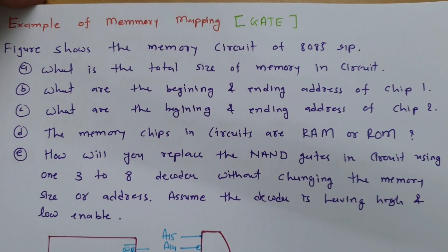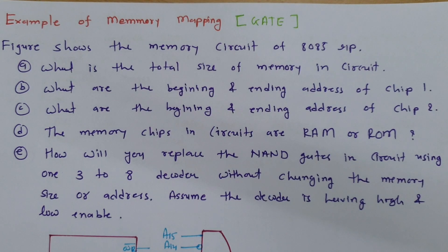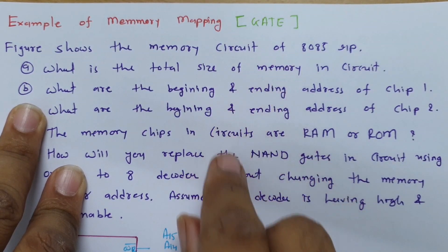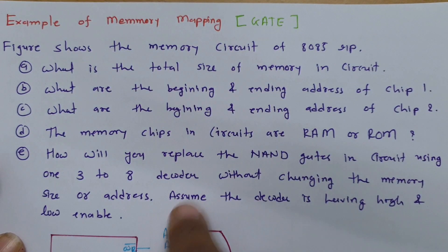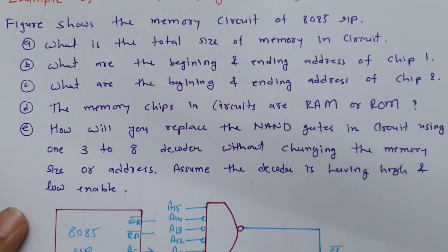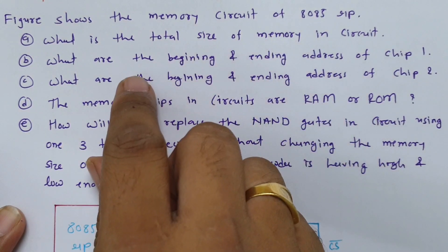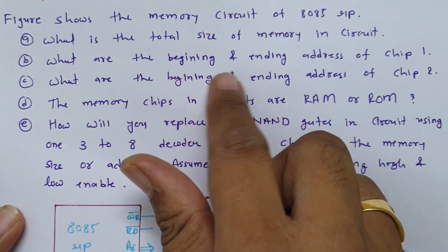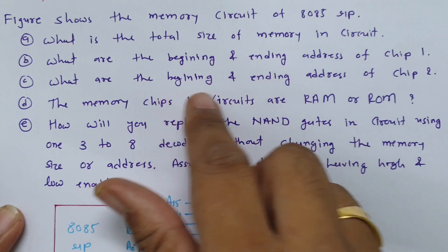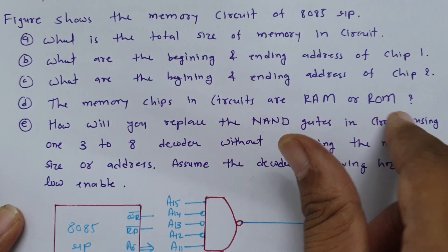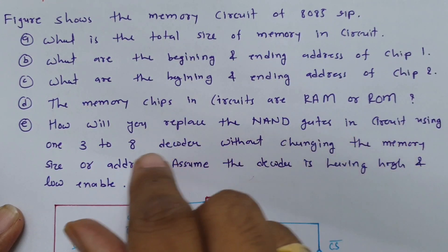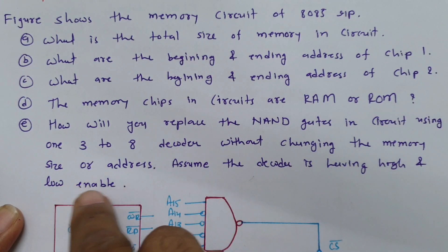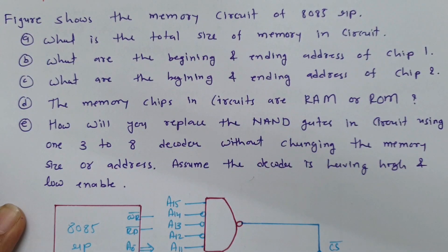Welcome to the microprocessor and interfacing playlist. In this question, I'll be explaining an example of memory mapping from a GATE examination — this was a five-mark question. We have been given a figure and need to calculate: the total size of memory, the beginning and ending addresses of chip 1 and chip 2, whether the memory chip is RAM or ROM, and how to replace NAND gates with a 3×8 decoder without changing the memory size and address, assuming the decoder has high and low enable.